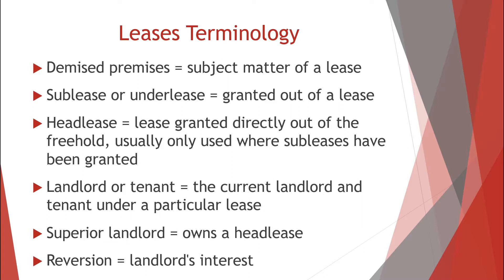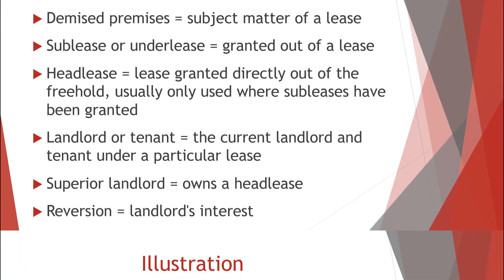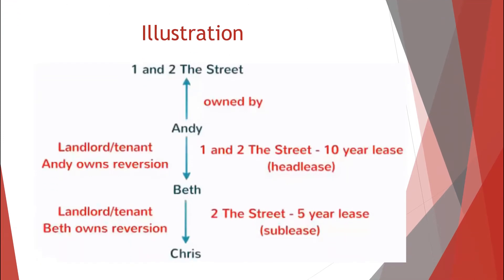The interest that the landlord has in relation to land from which he or she has granted a lease is known as the reversion. For example, Andy is the freeholder of 1 and 2 The Street. He grants a 10-year lease of both properties to Beth. Beth grants a five-year sublease of 2 The Street to Chris. Andy and Beth's lease is the head lease.